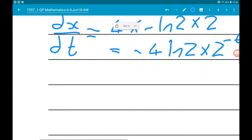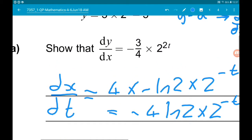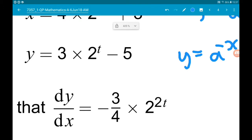dy by dt, well, that's going to be a bit nicer. So it's going to be 3 log 2 times 2 to the t.